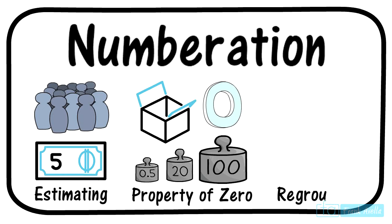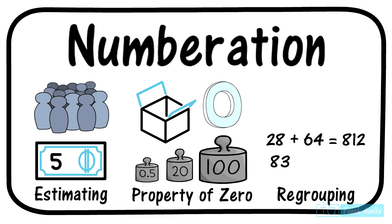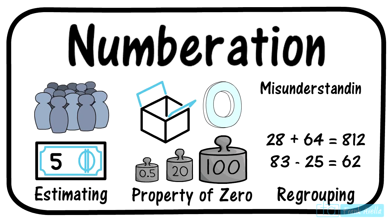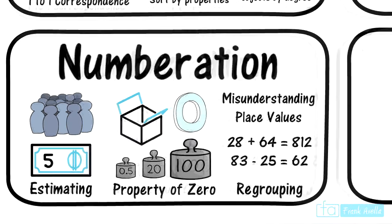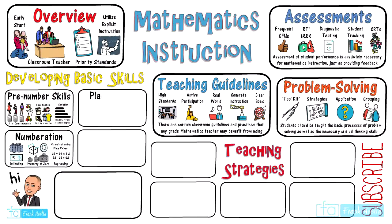The next component of numeration is regrouping, which relates to borrowing numbers with addition and subtraction, amongst other things. For the example of 28 plus 64, the student did not carry the one — what we have here is a general misunderstanding of place values that leads to an incorrect answer.